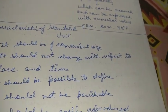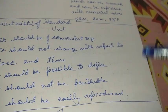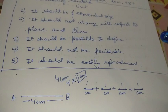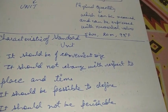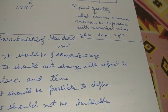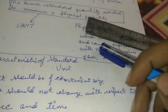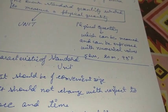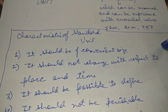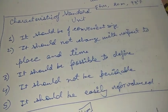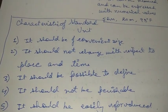Next, the standard unit should not change with respect to place and time. If you measure a book in India and it comes out to be 40 centimeters, then measuring the same book in America should give the same result. If it gives 4.2 or 4.5 centimeters instead, then the measuring unit is not of proper order. Whatever the actual length a scale contains, it should remain the same throughout the world. Also, it should be possible to define it, it should not be perishable, and it should be easily reproducible.